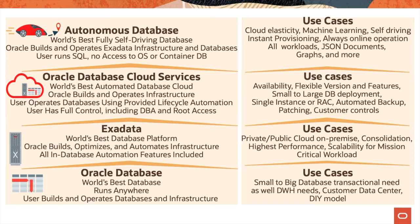Exadata is perfect for consolidation use cases where customers have a lot of databases and are looking to consolidate on one platform. It is ideal for highest-performance workloads and has a lot of scalability features, making it ideal for mission-critical workloads. The last section talks about Oracle Database, which is the world's best database and can run anywhere. The user builds and operates databases and infrastructure. This is ideal for customers with small to big database transactional as well as data warehousing workloads, and ideal for customer data centers or a do-it-yourself model.